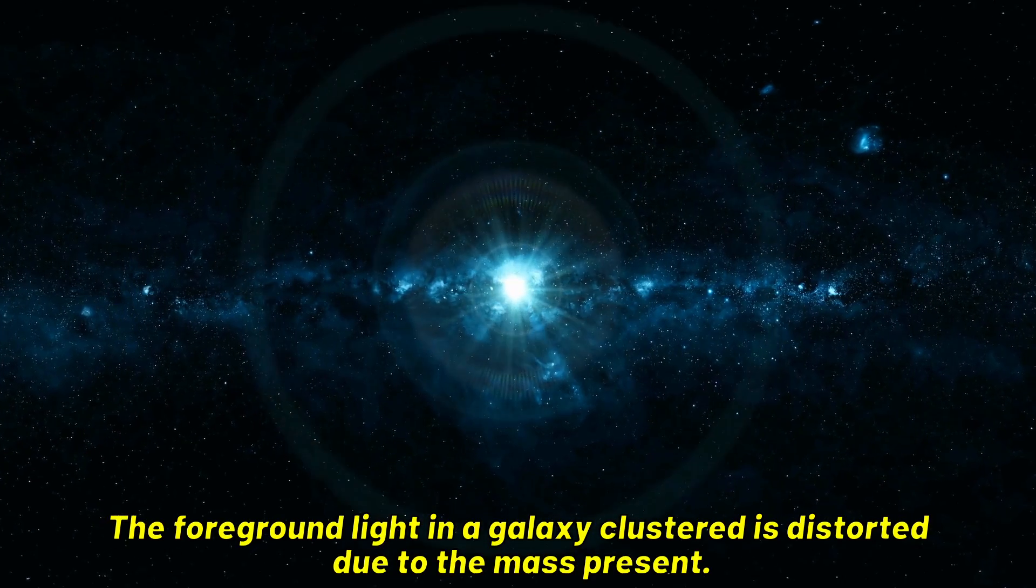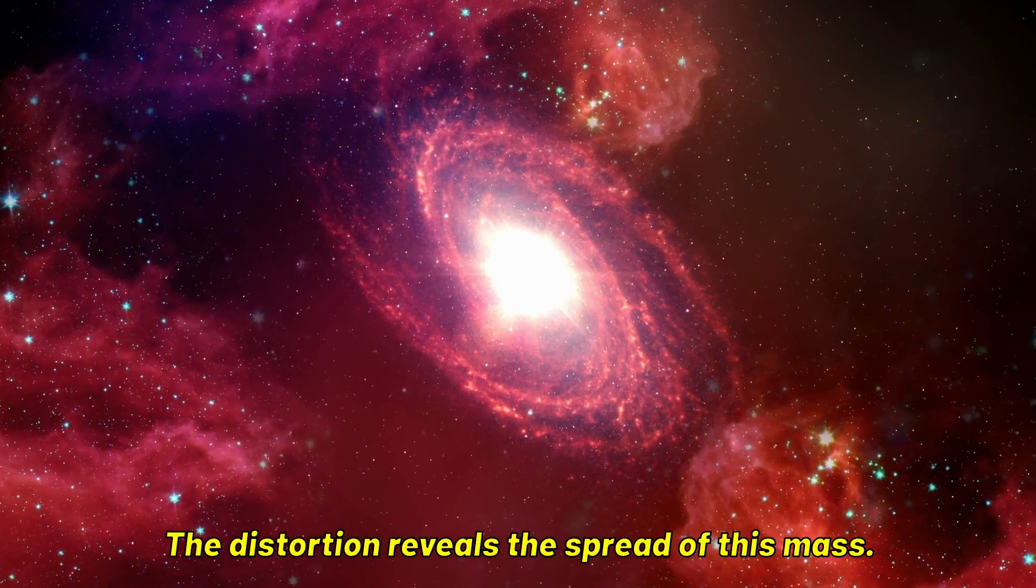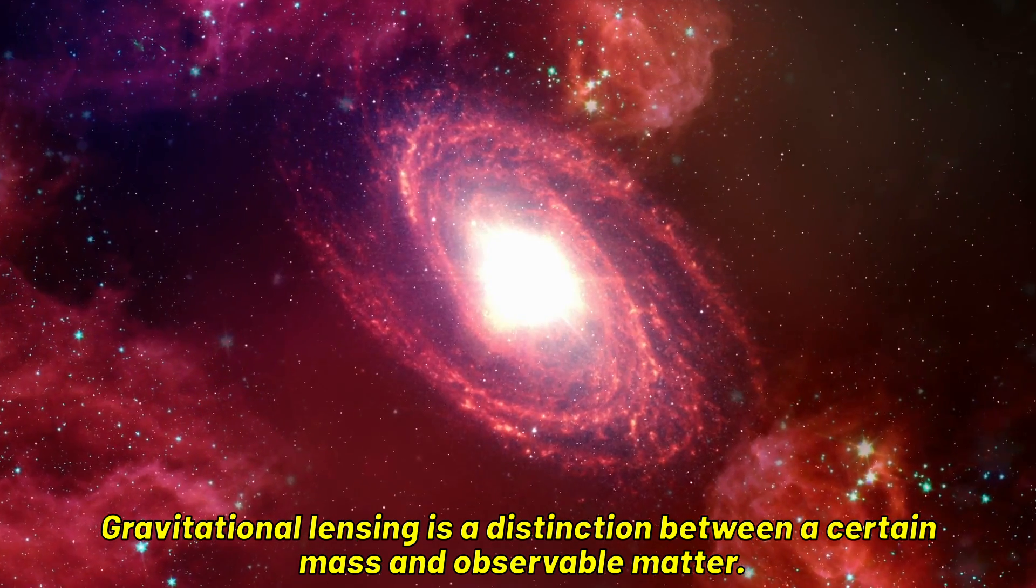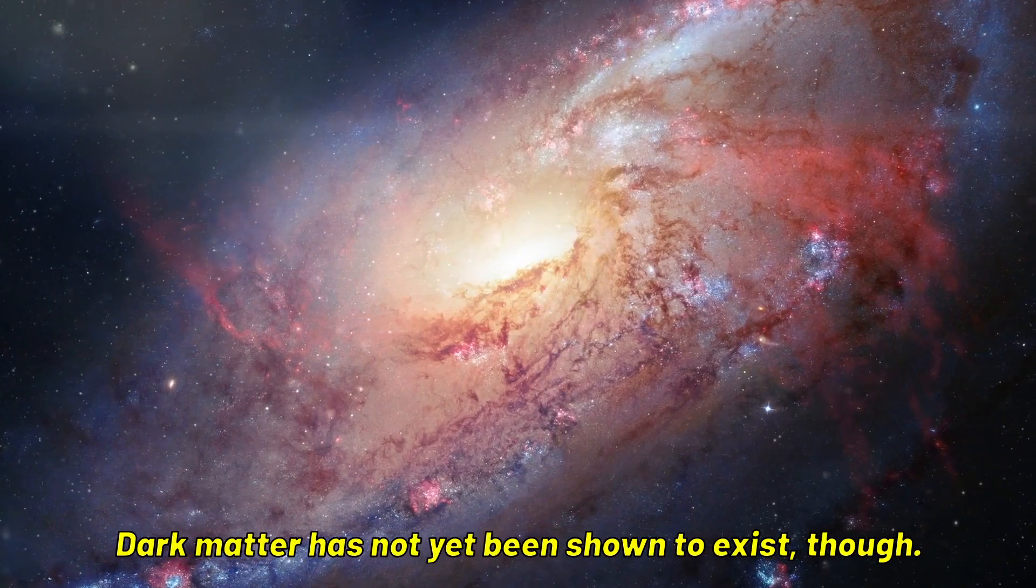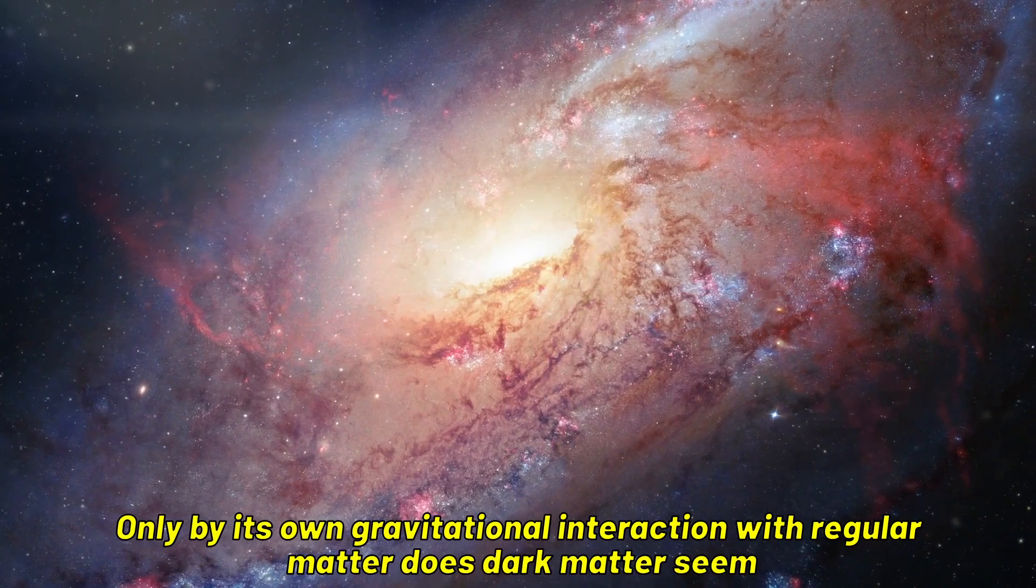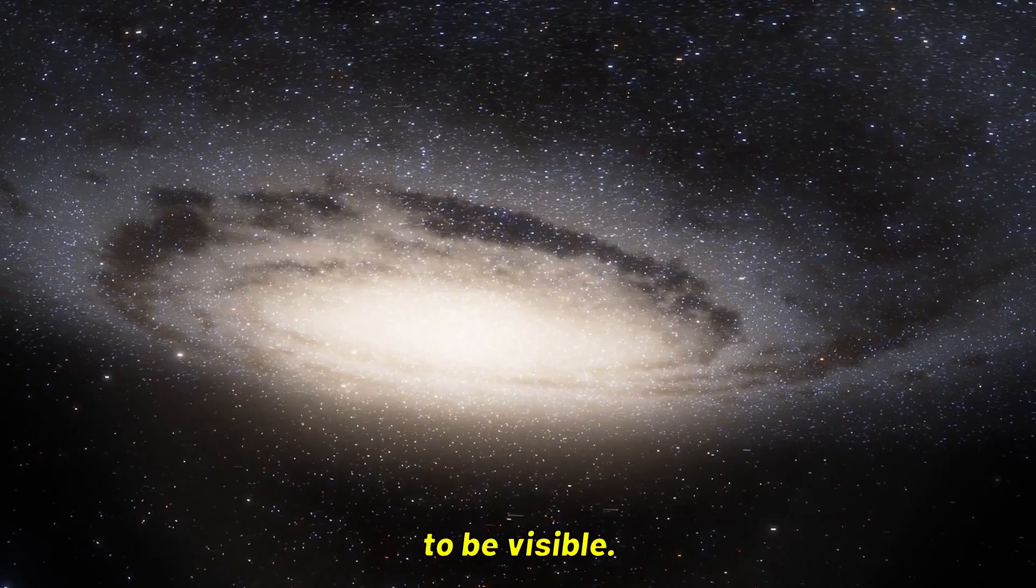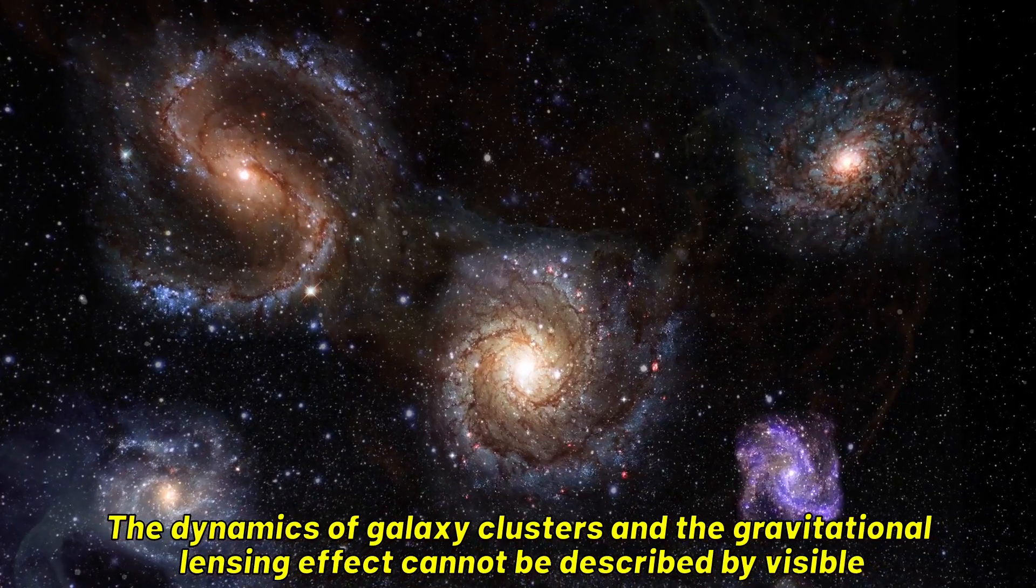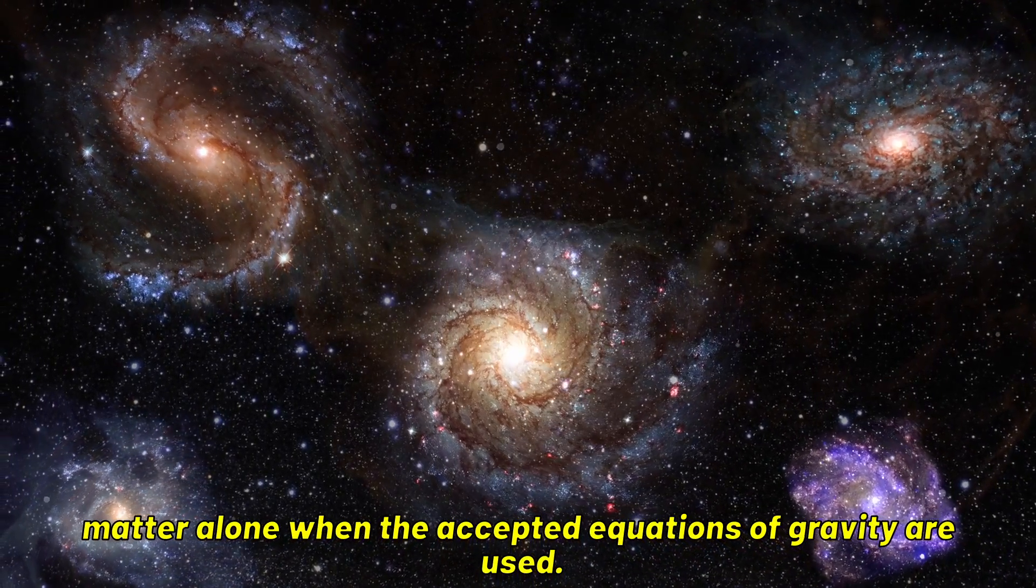The foreground light in a galaxy cluster is distorted due to the mass present. The distortion reveals the spread of this mass. Gravitational lensing is a distinction between a certain mass and observable matter. Dark matter has not yet been shown to exist, though. Only by its own gravitational interaction with regular matter does dark matter seem to be visible. The dynamics of galaxy clusters and the gravitational lensing effect cannot be described by visible matter alone when the accepted equations of gravity are used.